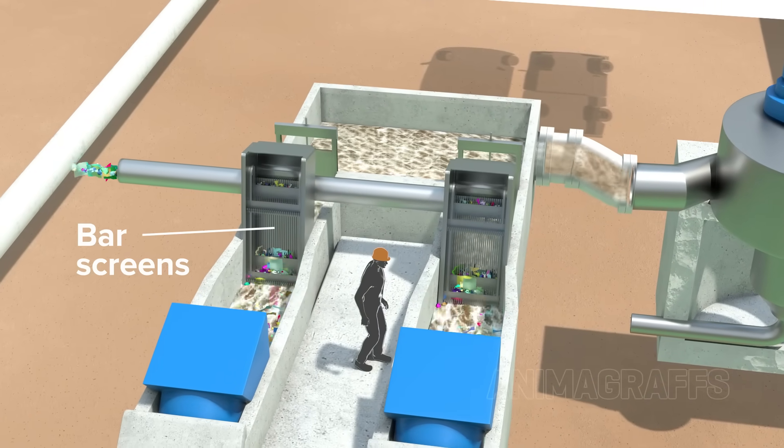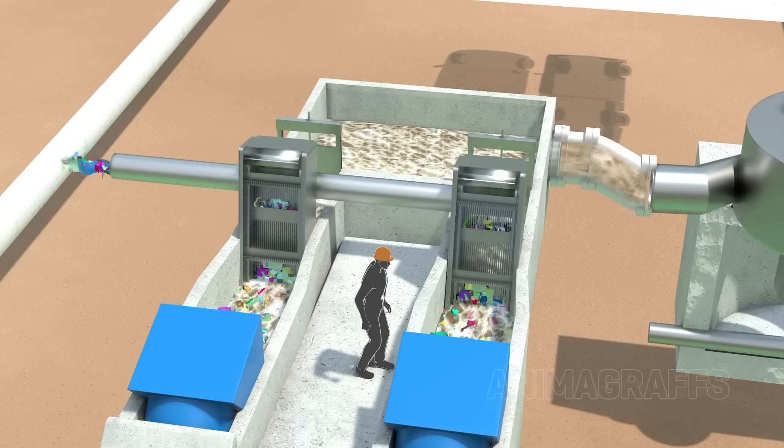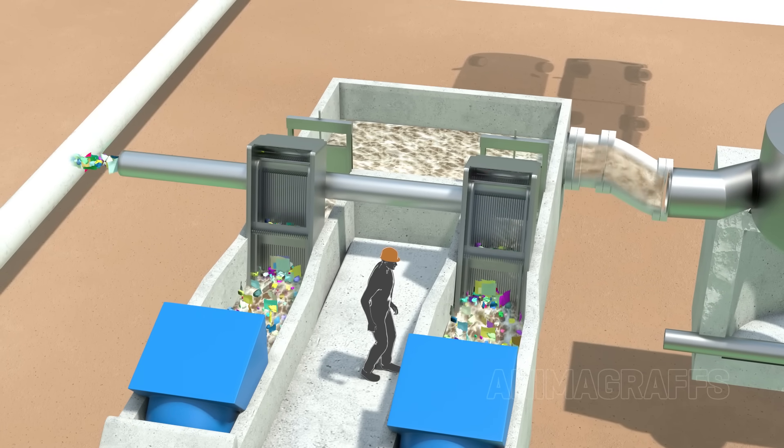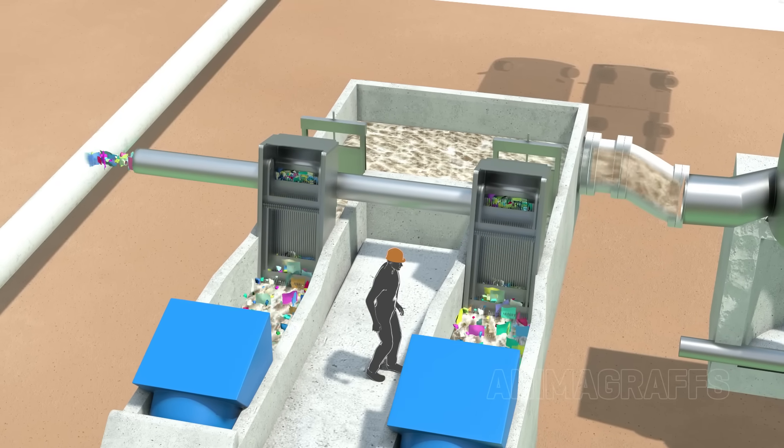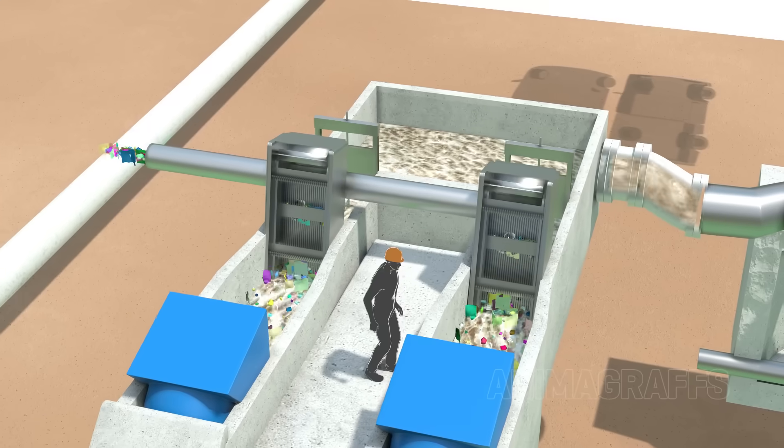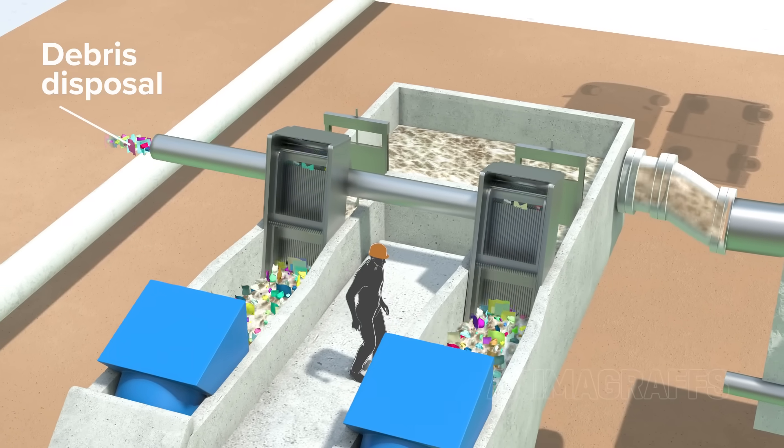Bar screens trap debris, including literal tons of items that really shouldn't be flushed or sent down the drain, such as baby wipes, q-tips, diapers, paper towels, medication, and so on. A moving platform, called a rake, scrapes the bars, removing the debris for separate processing and disposal.